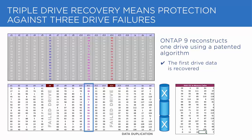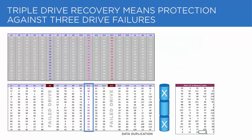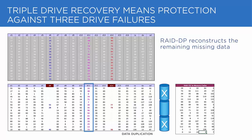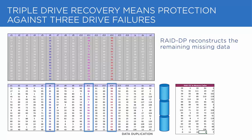At this point, ONTAP uses the proven RAID DP technology to restore the data on the remaining two drives, and we see that ONTAP has recovered all of the data intact.